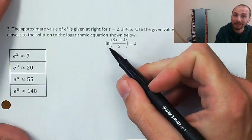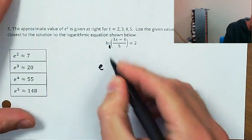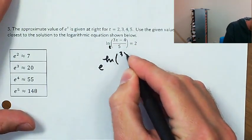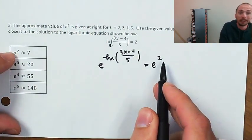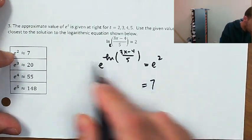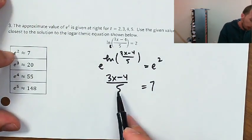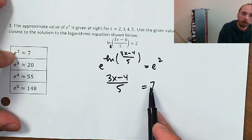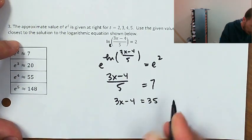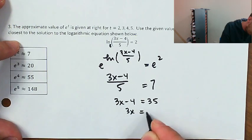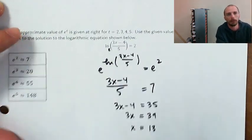On this one I've got a natural log, which is base e, of this expression equals 2. So I need to take e to both sides as a power. e to the natural log of (3x minus 4) divided by 5 equals e to the 2, which is approximately 7. So I'll plug in 7: (3x minus 4) divided by 5 equals 7. Multiply both sides by 5, giving 35. So 3x minus 4 equals 35, add 4 to both sides, divide by 3 — 39 divided by 3 is 13. That's the closest integer.